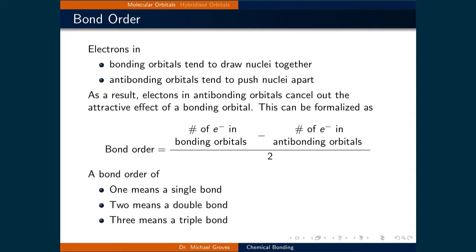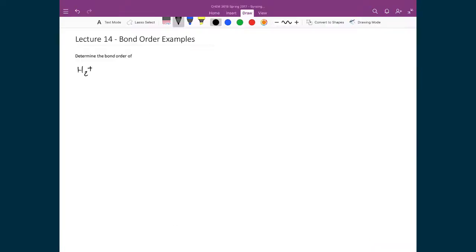Bond orders can be directly related to what type of bond is in between the atoms. For instance, a bond order of 1 means that there is a single bond between the pair of atoms. A bond order of 2 means there is a double bond, and a bond order of 3 means there is a triple bond.